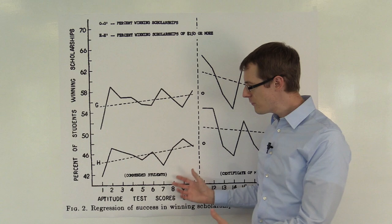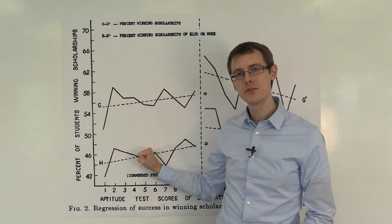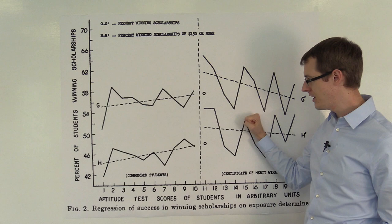say take the average percentage of students winning scholarships over here, the average outcome, and compare it to the average outcome over here, we would also see that overall the average is higher.